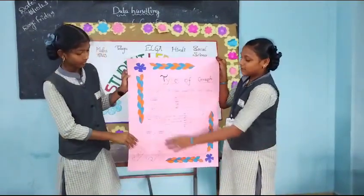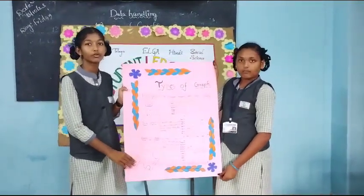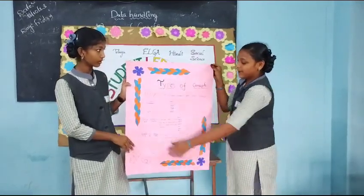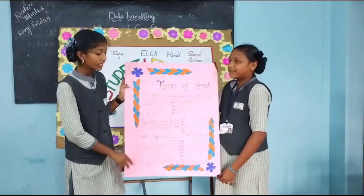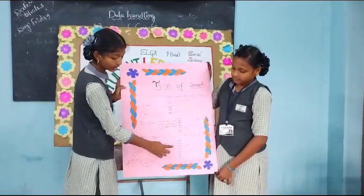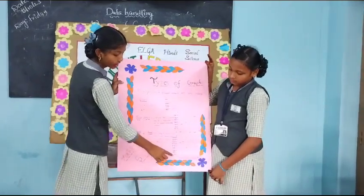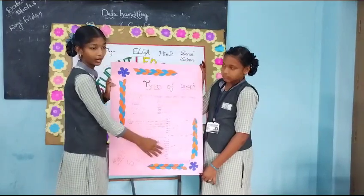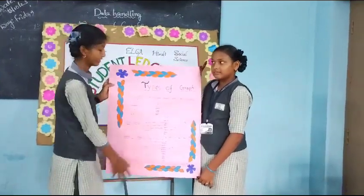Bhavani, what is meant by double bar graph? Can you give one example for double bar graph? Yes, I will give one example for double bar graph. In this, on the Y-axis, they show the population of cities in Karnataka and Assam, represented side by side using double bars with a scale of 10.